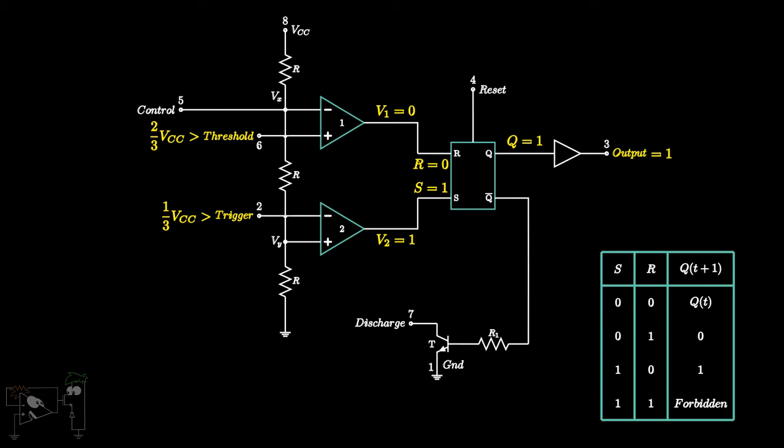Thus, by controlling the trigger and threshold voltage, we control the output of the timer. Usually, we control the voltages at these two terminals by adding external resistors and capacitors. The external resistors and capacitors are charged via the supply voltage VCC.